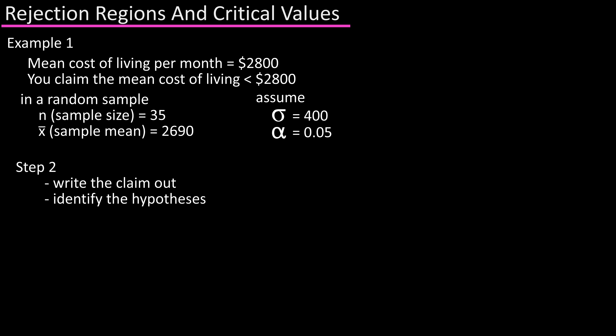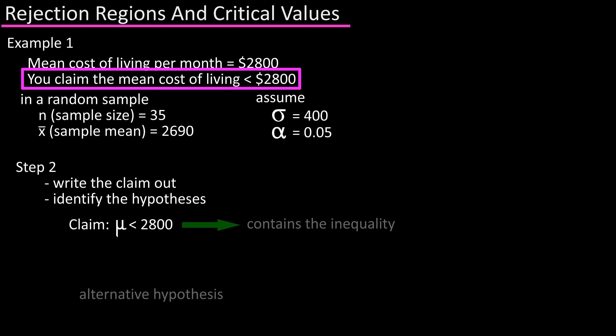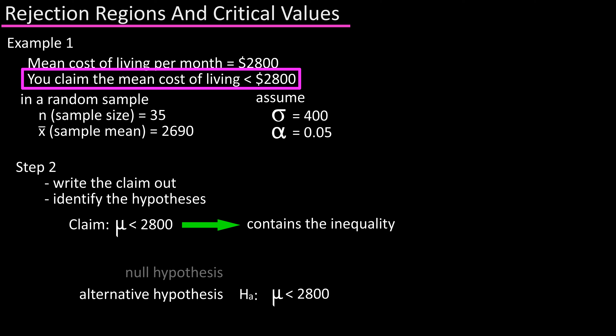Step two: write out the claim and identify the null and alternative hypotheses. The claim is that the mean mu is less than 2,800. We know the alternative hypothesis contains a statement of inequality, so H-sub-a is mu less than 2,800. The null hypothesis is the complement and contains a statement of equality, so H-sub-zero is mu greater than or equal to 2,800.